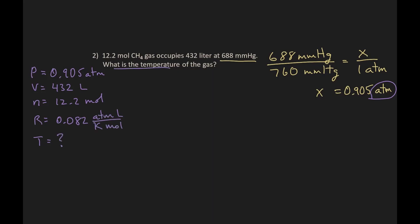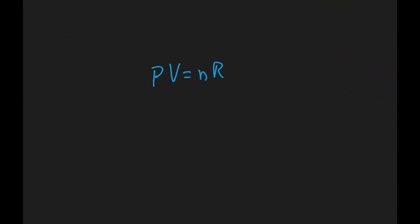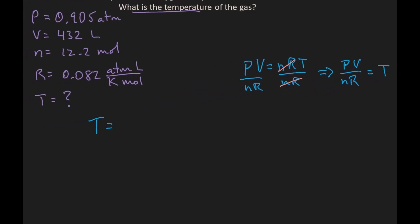Temperature is the unknown, and so that is what we will solve for. So if we divide both sides of the equation by NR, NR cancels on the right and so we have PV over NR equals T. So let's go over here so we have a little more room. So T equals PV over NR and we'll just fill in all the values.